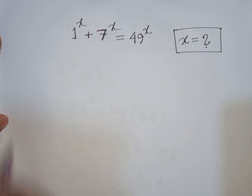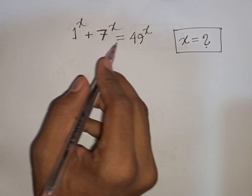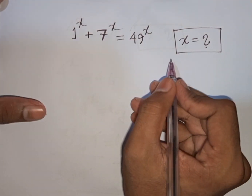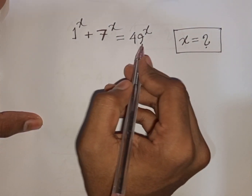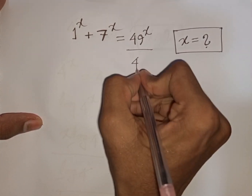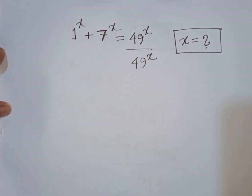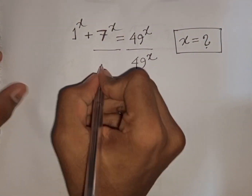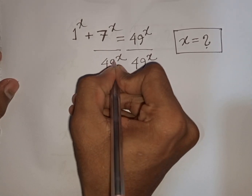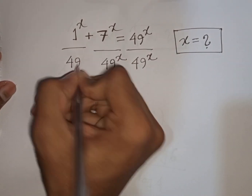How to solve 1^x + 7^x = 49^x. Find the value of x. At first we divide both sides by 49^x: divided by 49^x on both sides.